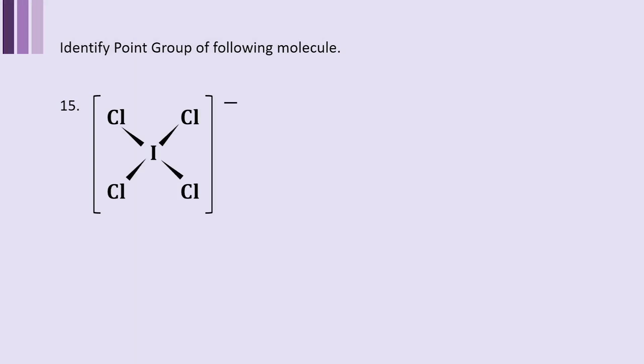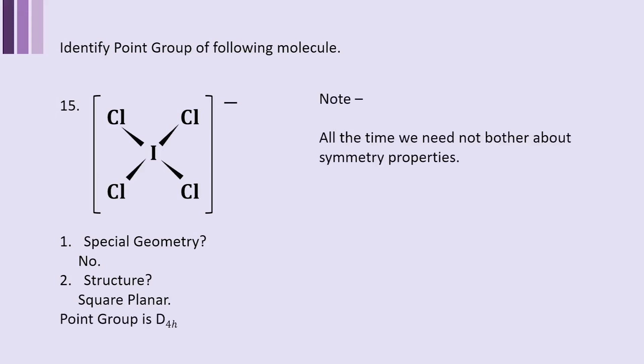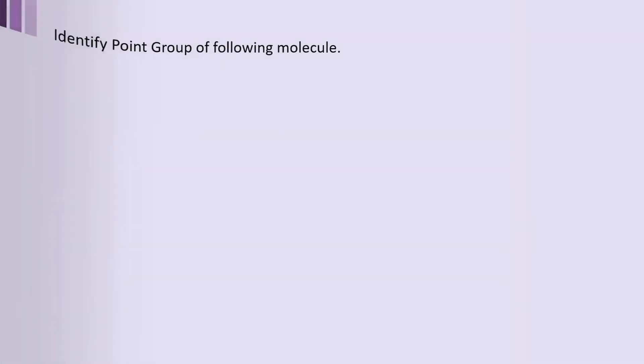If you talk about ICl4- molecule, it does not have any special geometry. But the structure is a planar structure. If it has a planar structure, straightforward the point group is D4H. All the time we need not bother about symmetry properties. You just make some inspection and identify the molecular point group. In the coming video we will discuss obtaining the point group without actually identifying the symmetry properties on the basis of pre-made structures.